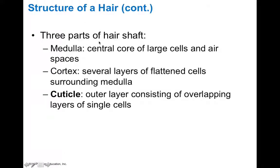The three parts of a hair shaft include the medulla, cortex, and cuticle. Medulla means marrow, so this is the central core of large cells and air spaces. The cortex is several layers of flattened cells that surround the medulla, and the cuticle is the outer layer that consists of overlapping layers of single cells.